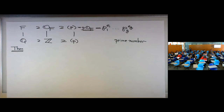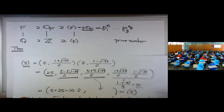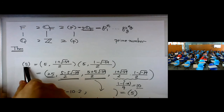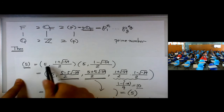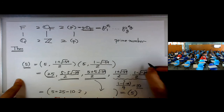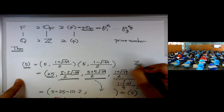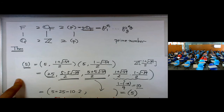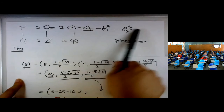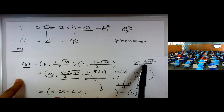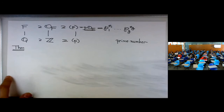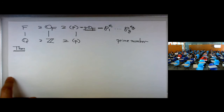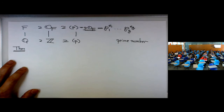I'm going to introduce a theorem to show how to compute this factorization in practice. As an example, I want to factor 5 inside the ring of integers for Q(√-39), which involves the element 1 plus the root of negative 39, divided by 2.